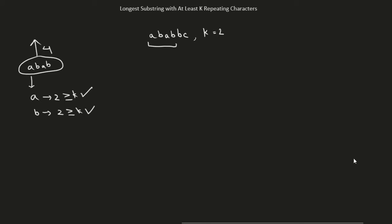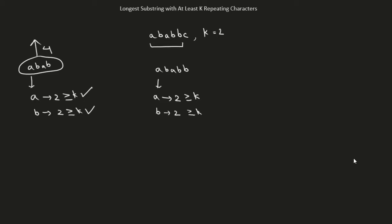What if we take this as our substring: A, B, A, B, B? It has two unique characters. A occurs twice, which is greater than or equal to k. And B occurs twice, which is also greater than or equal to k. The length of this substring is 5.